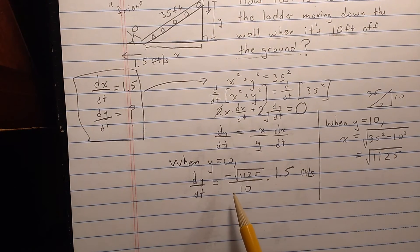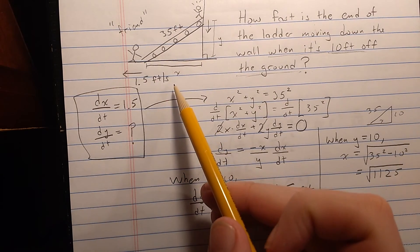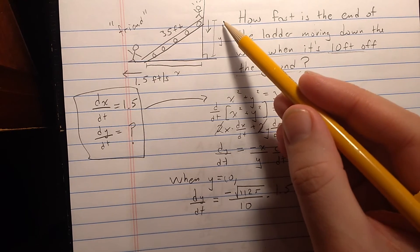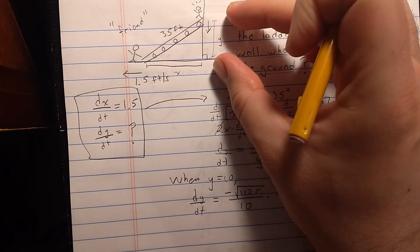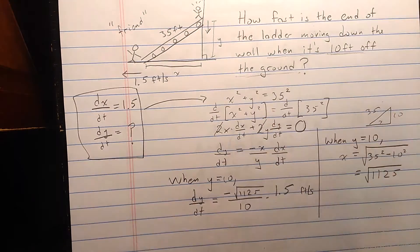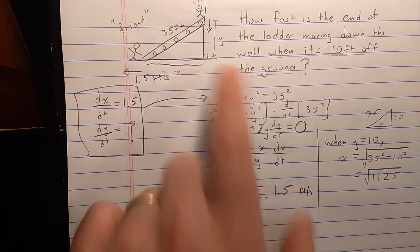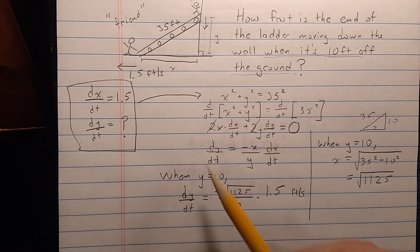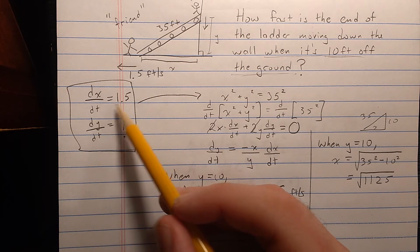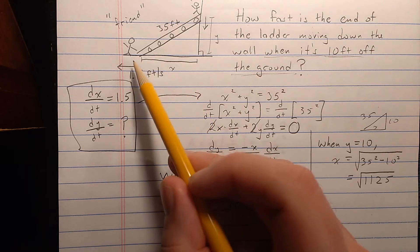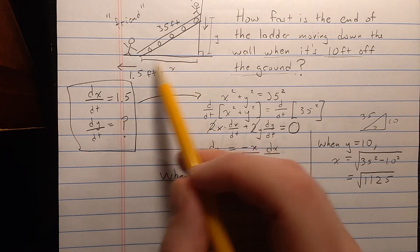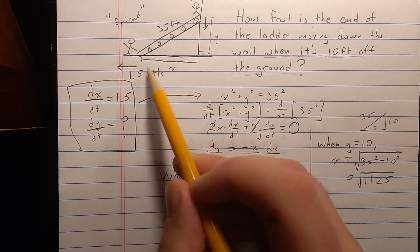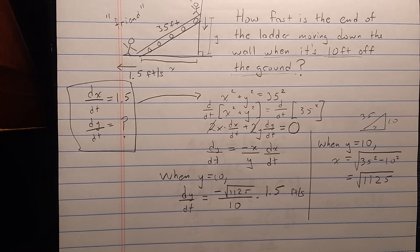Why is it negative? x is an increasing quantity since he's pulling the ladder away from the wall, but y is actually decreasing because y gets smaller as time increases and he pulls it away and you move down. So it's appropriate that dy/dt is negative when dx/dt is positive. If you reworked this problem with him pushing the ladder toward the wall, you'd set dx/dt equal to a negative number, and then dy/dt would come out positive.